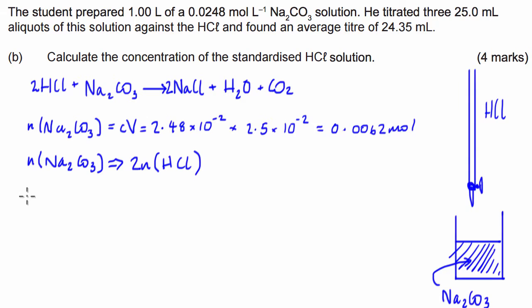So from this we can then deduce that the number of moles of hydrochloric acid in this 24.35 mL titration has to be equal to 2 times 0.0062 which is equal to 0.0124 mol in 24.35 mL. Cool.